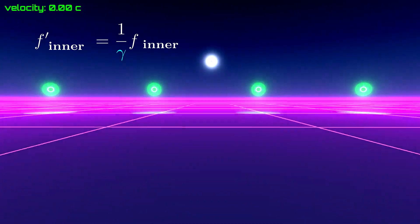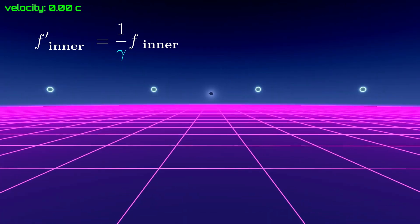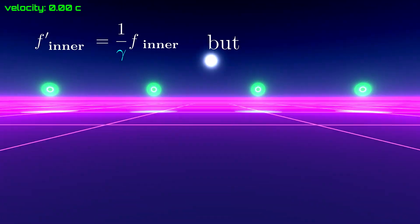But, and this is the key point, the ripples create some extra spatial ups and downs, which counteract the effect of time dilation.